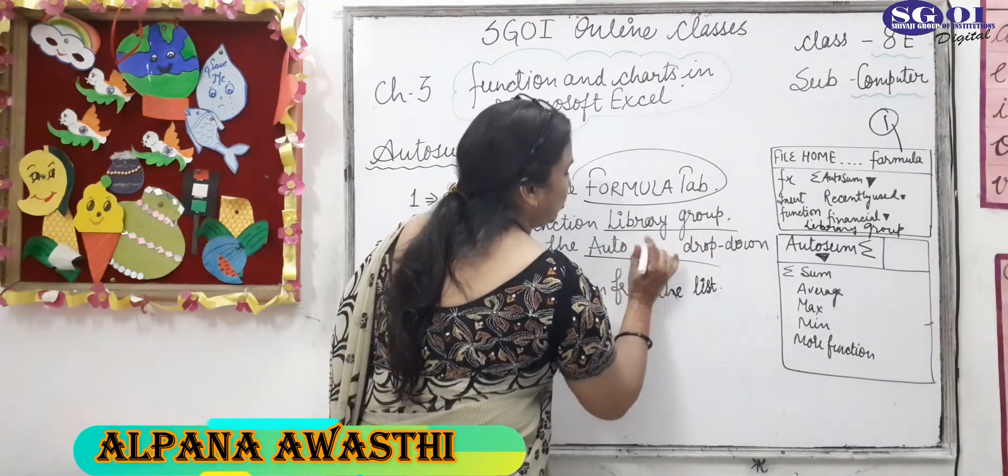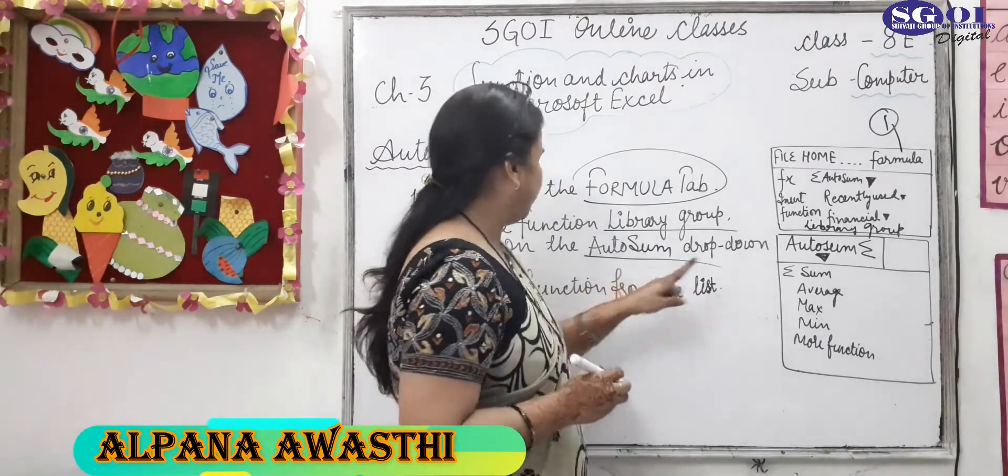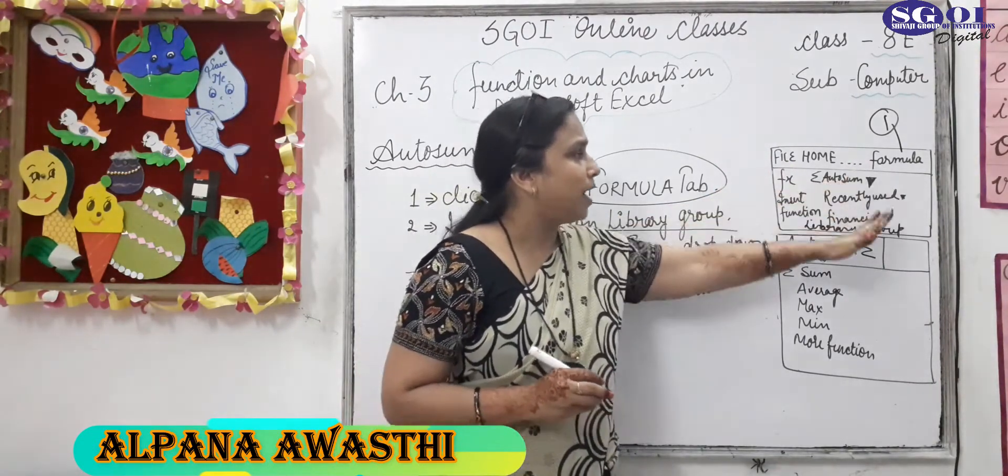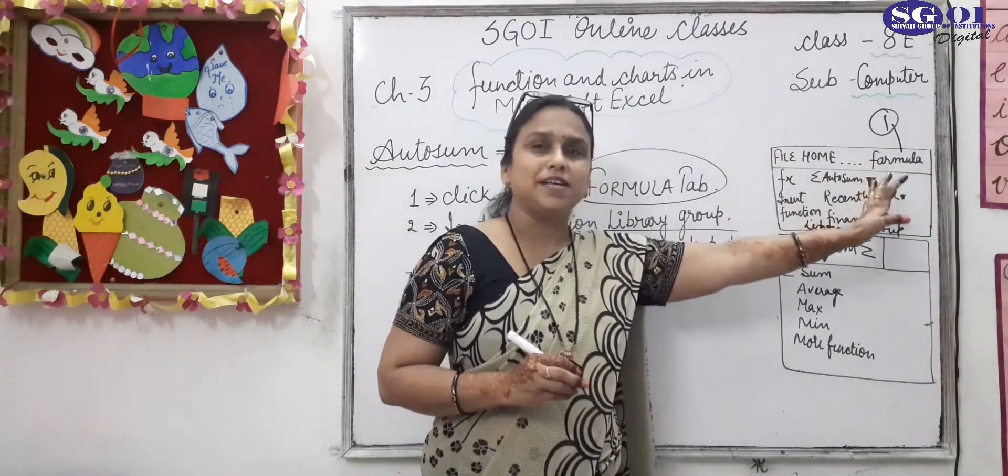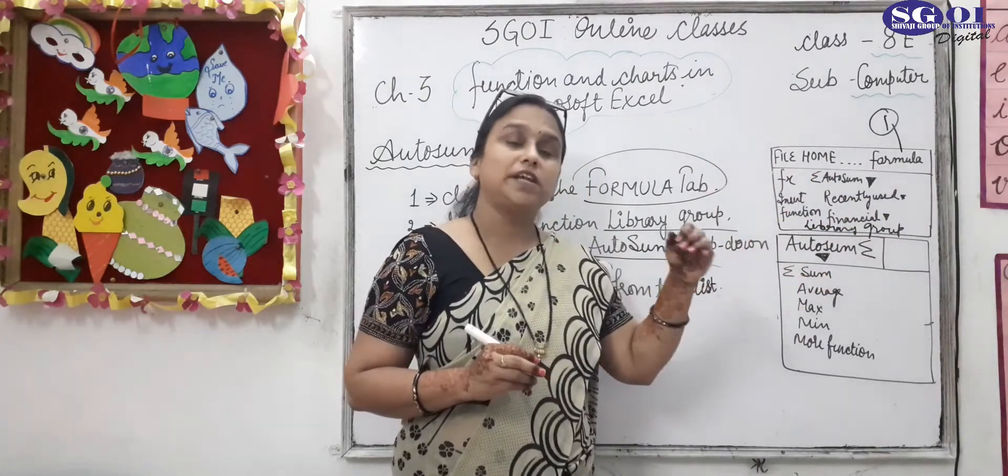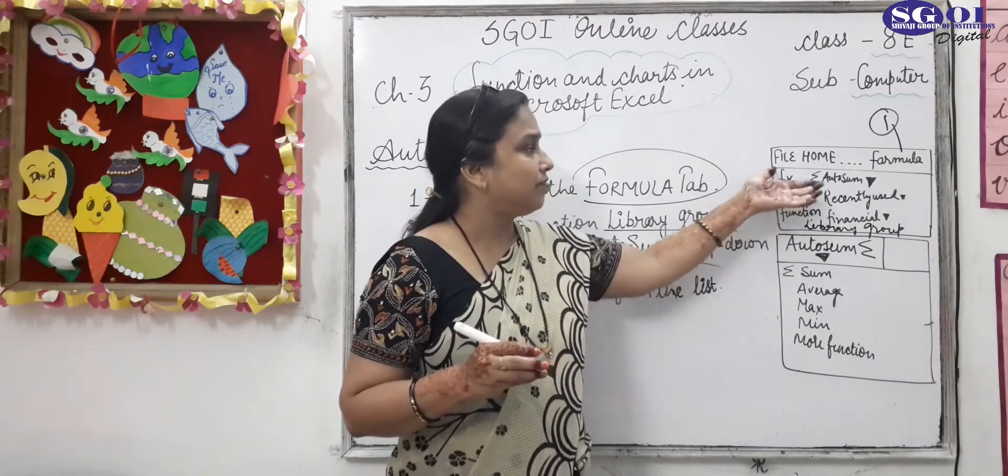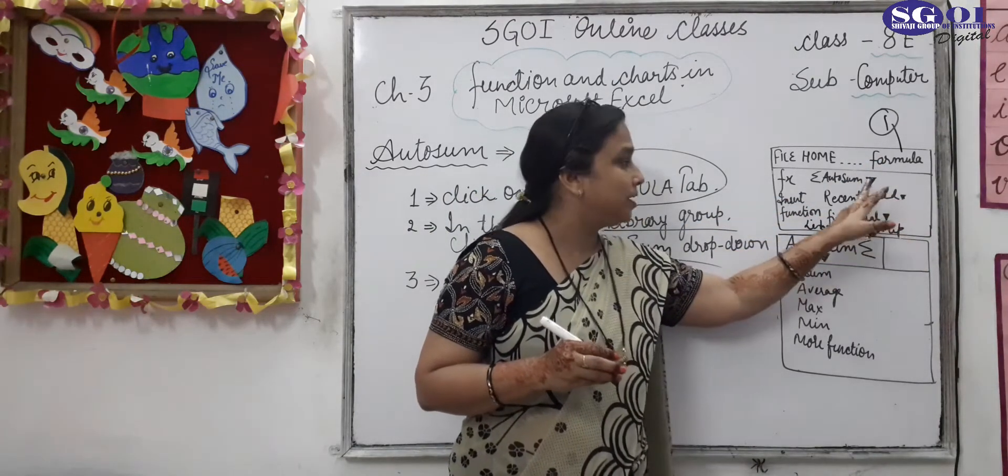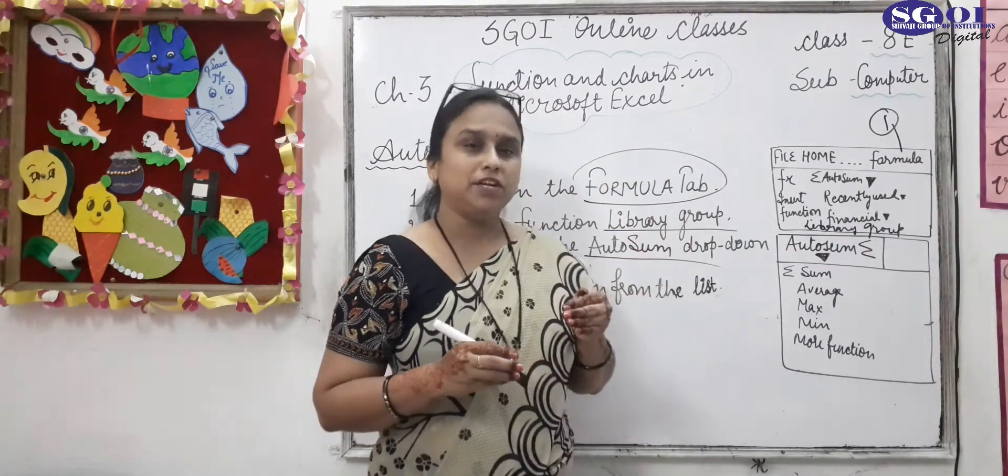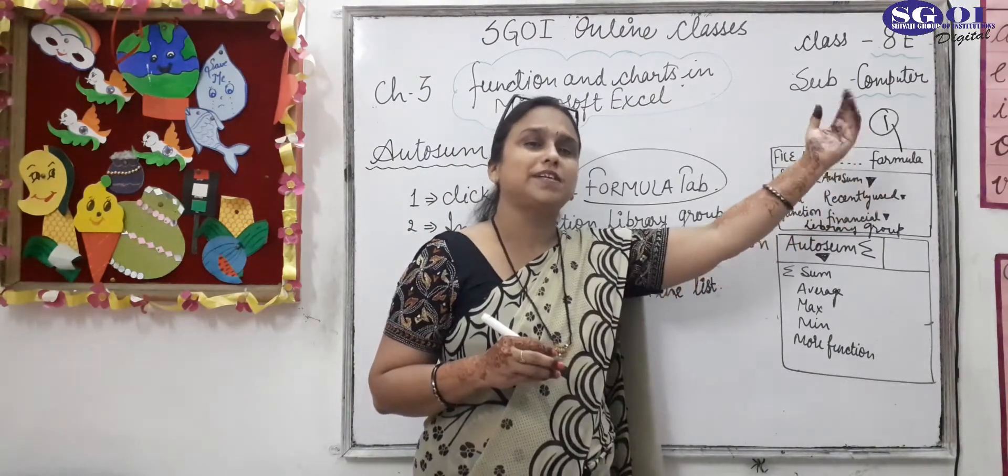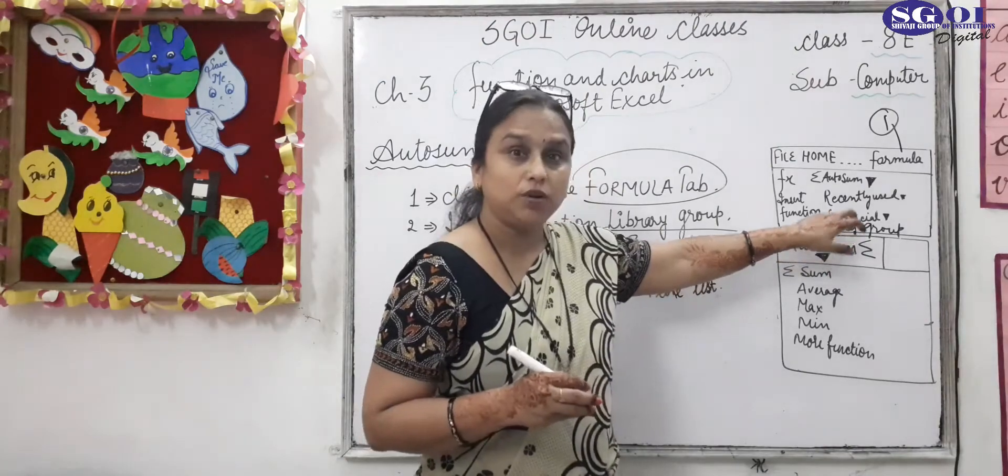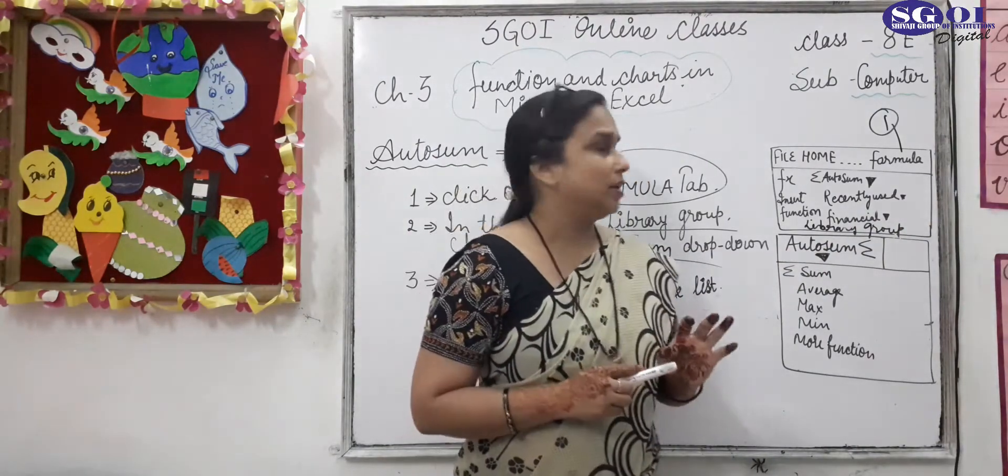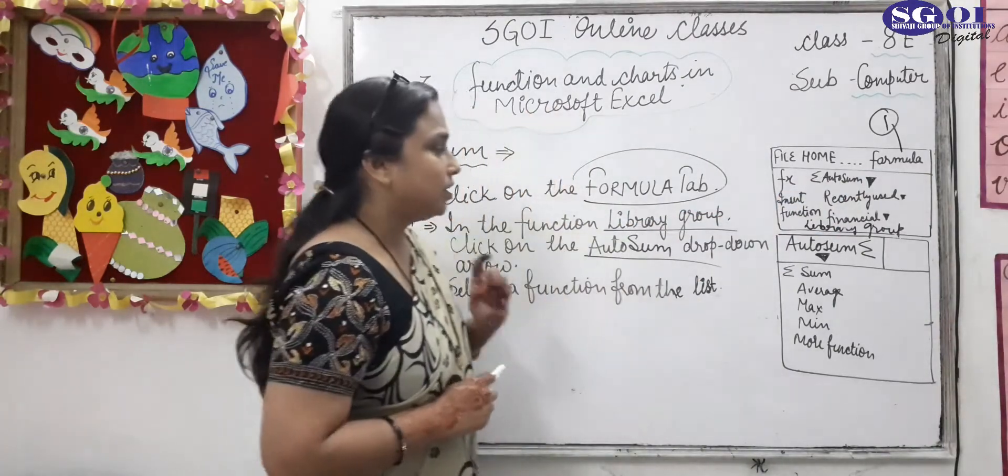You click on auto sum. Note that the recently used functions - all of these are the drop down arrow through which we can select many functions: financial, mathematical, text functions.